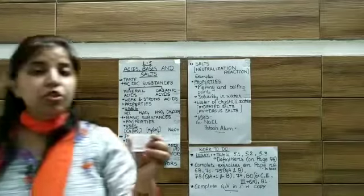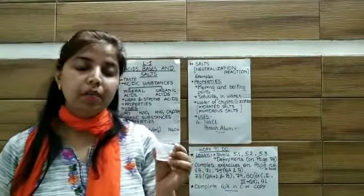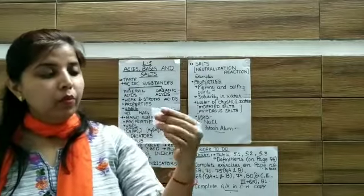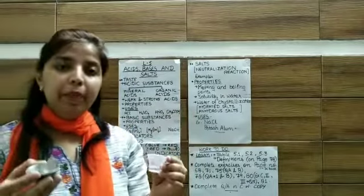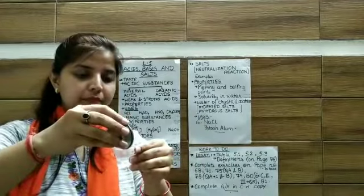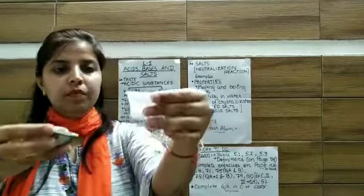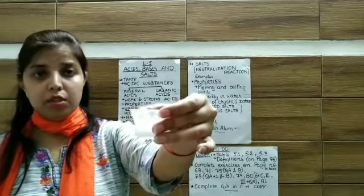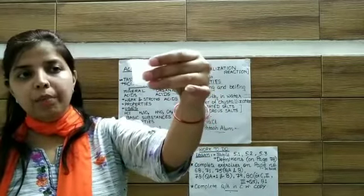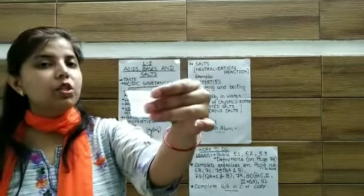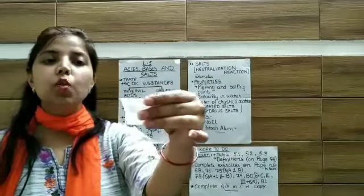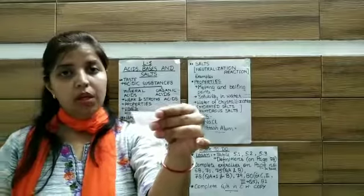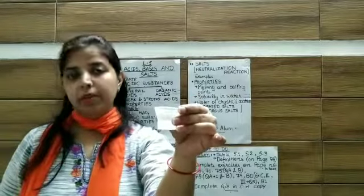This reaction, children, I have told you in Chapter 4 also. When vinegar reacts with baking soda, you can see effervescence—carbon dioxide gas is released, water is also there, and salt is formed. That salt is called sodium acetate. You have already written this reaction in the previous chapter.